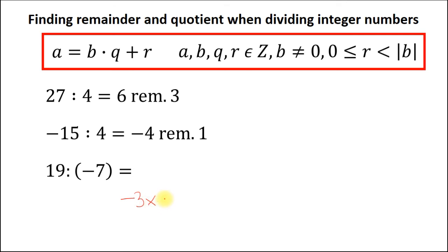Well, then we should multiply minus 3 by minus 7. That equals 21. And then we should add minus 2 to get our initial dividend. But this number minus 2 is not going to be a remainder, because the remainder must be positive.